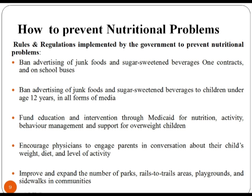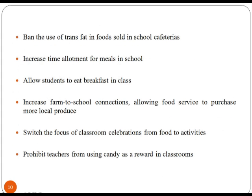Some rules and regulations implemented by the government to prevent nutritional problems: 1. Ban advertising of junk food and sugar-sweetened beverages on contracts and on school buses. 2. Fund education and intervention through Medicaid for nutrition activity, behavior management, and support for overweight children. 3. Encourage physicians to engage parents in conversation about their child's weight, diet, and level of activity. 4. Improve and expand the number of parks, playgrounds, and sidewalks in the community.